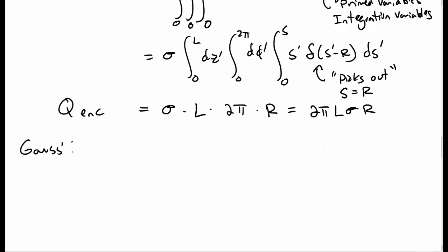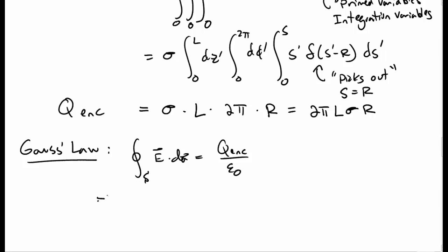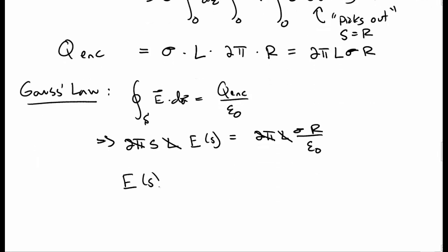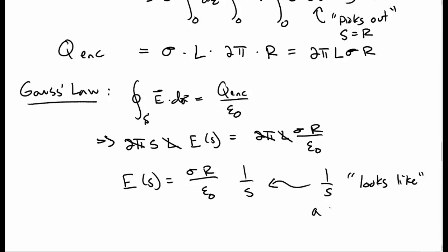Now we have both halves of Gauss's law. The flux of the electric field must equal the charge enclosed over epsilon-naught. Putting in the flux and the charge enclosed, we solve for the electric field, canceling some factors. The electric field is sigma r over epsilon-naught times 1 over s. This 1 over s dependence looks like a line charge, which is a generic feature we expect in this case.